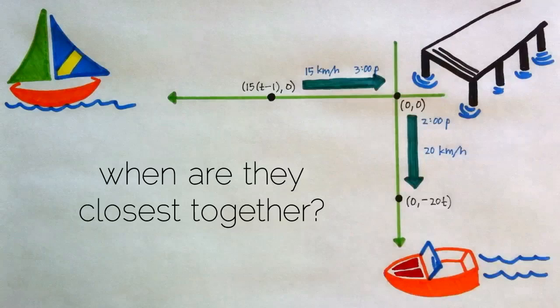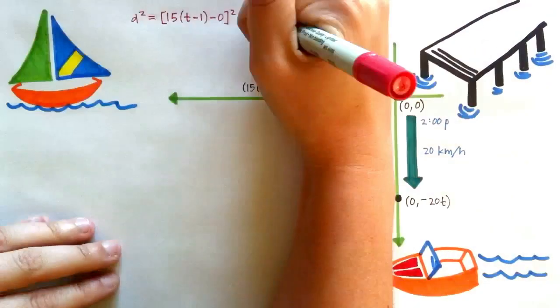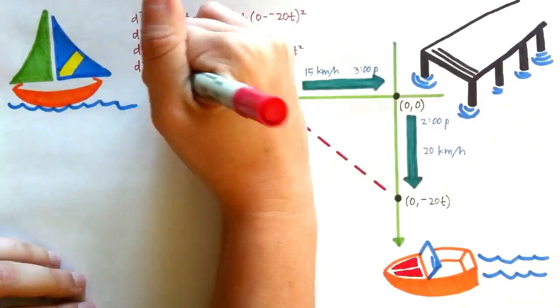The problem asks us to find the point in time when the boats are closest together. Since the line between them forms a right triangle with their paths, we can use the Pythagorean Theorem to find the distance between them. The length of one side is 15(t - 1) minus 0, and the length of the other side is 0 minus -20t. We'll plug this into the Pythagorean Theorem and then simplify.